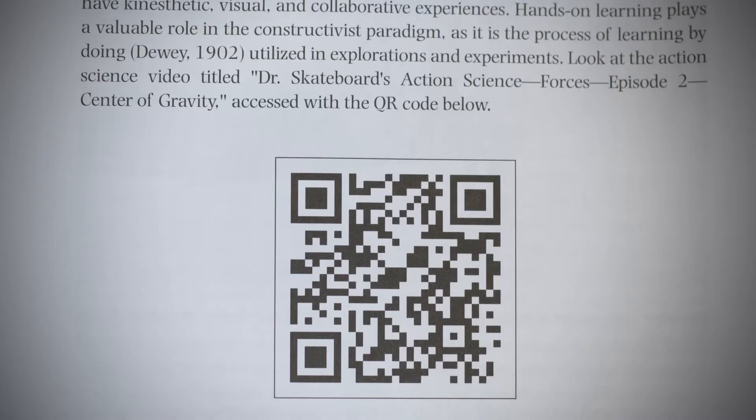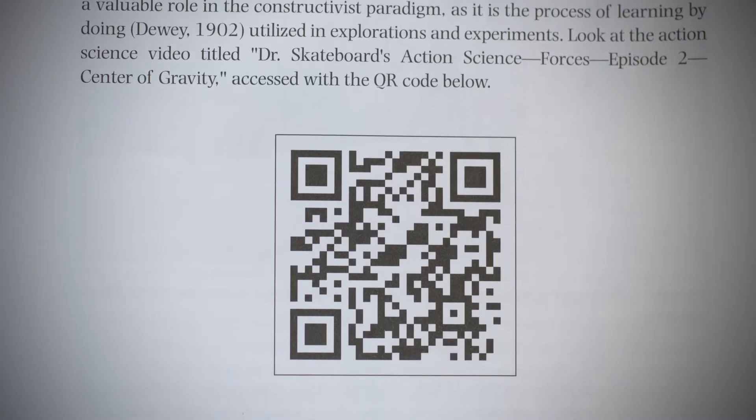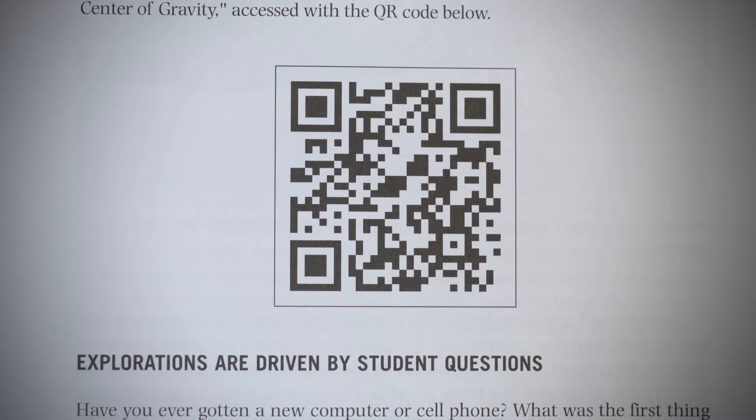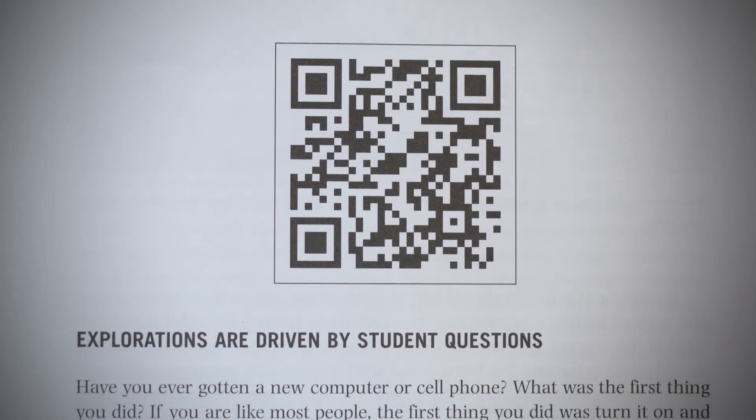Another interesting feature of the book is that it uses QR codes to bring movies out of the text. A teacher or a student can go over the part of the book with their mobile device or their tablet, and they can activate the QR code, and movies will pop out of the book.